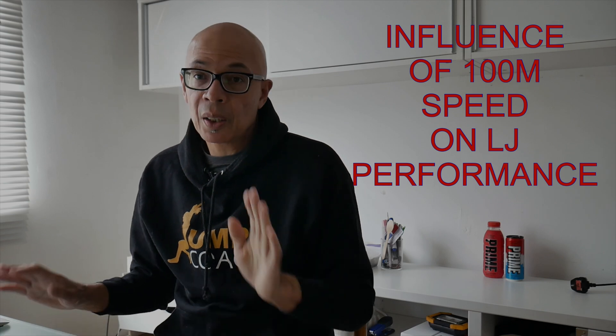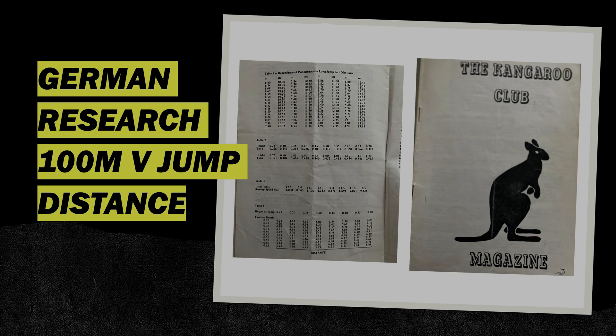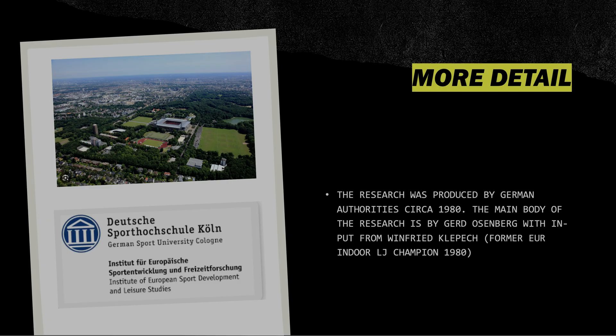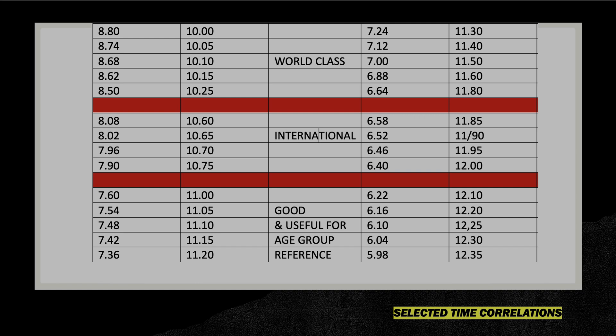The key element of the research is the influence of 100-metre time on long jump distance. This research was presented in an old Kangaroo Club magazine from the 1980s, and the research came from the German Sports School in Cologne. The main body of research was produced by Gerd Ossenberg, with input from Winfred Klepsch, who was a former European indoor long jump champion in 1980. On this slide I've collated times relating from the 100 metres to jump distance. For example, the Germans indicated that running 100 metres in 10 dead would give a long jump possibility of 8 metres 80.